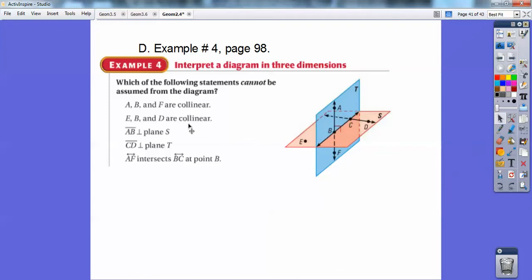How about E, B, and D are collinear? E, B, and D. They look like they might be, but there's no line going through them. I cannot assume it is, so I'm going to say that one is probably not true. I can't assume that. Okay, segment AB is perpendicular to plane S. Here's segment AB, perpendicular, yep, there's a right angle right there. That looks good. Segment CD, perpendicular to plane D. Okay, here's segment CD, perpendicular to plane T. I don't see a right angle, so that one doesn't look good.